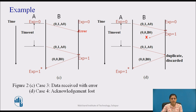In Figure 2d, case 4 shows the situation if an acknowledgement gets lost. The sender will resend the frame after timeout. After sending a frame, the sender starts a timer. If the receiver gets a frame without error, it sends an acknowledgement. But if the acknowledgement gets lost in transit, the sender will retransmit the frame after the timeout, creating duplicates at the receiver. The receiver will discard the duplicates.